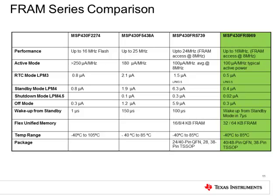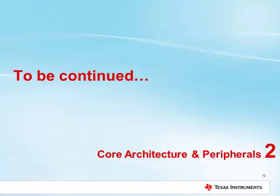Before concluding the first module, let's quickly look at how this family differs from existing product offerings. The FR59 operates up to 16 MHz, with the lowest active and standby power of any MSP430 — 100 µA per MHz active power and 500 nA standby in RTC mode. Wake-up time from LPM3 and LPM4 is about 7 microseconds. Embedded FRAM provides unified memory capable of code, data, and constant storage. In our next module, we will discuss FR59 core architecture and peripherals in more detail. Thank you for listening.